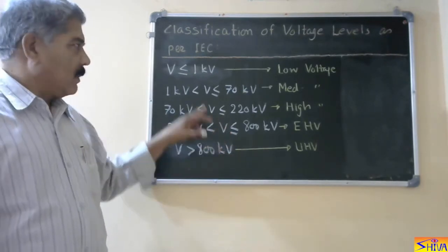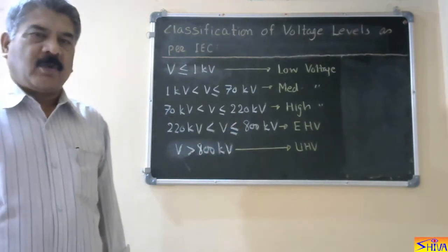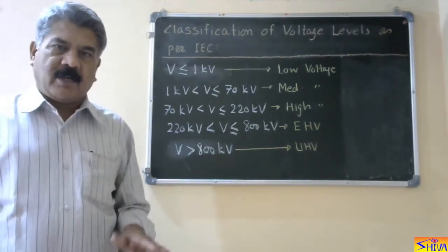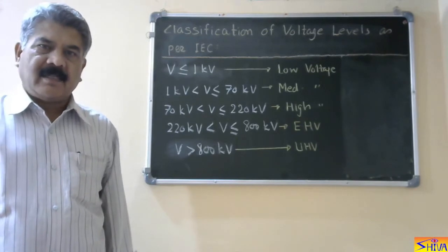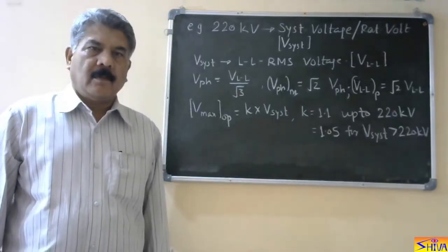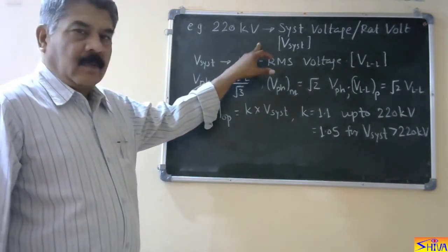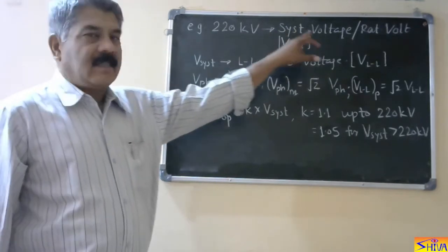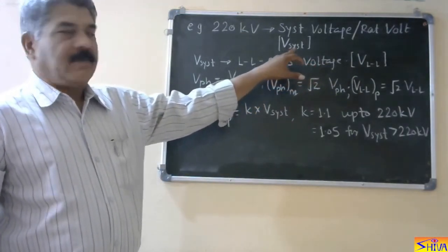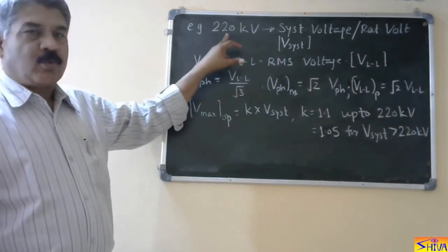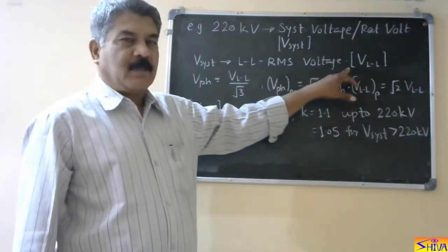An important point: these voltage levels specified are line-to-line voltage and RMS values. So if we consider a 220 kV line, then 220 kV is the nominal or rated voltage of the system, and that 220 kV is the RMS line-to-line value. We can denote this as V_system, which equals V_line-to-line.